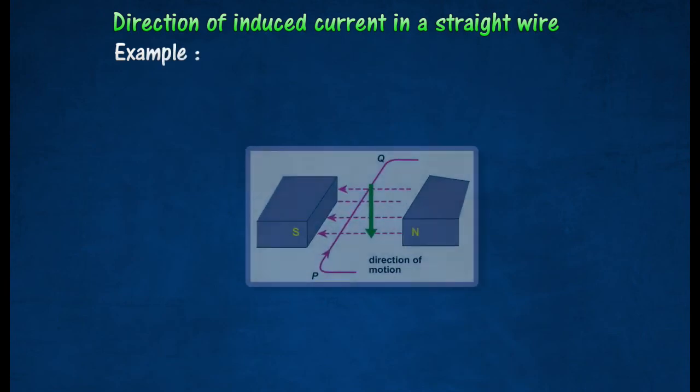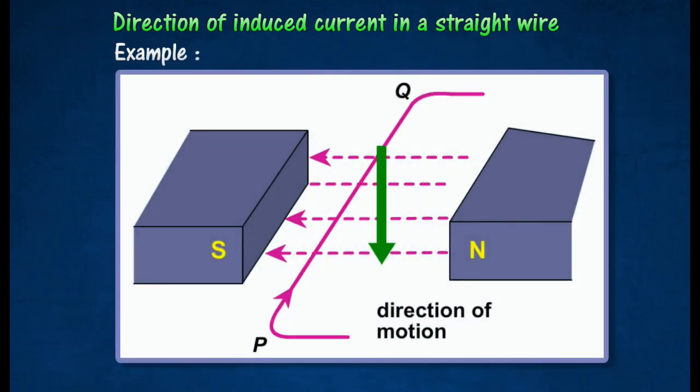A wire PQ is moved vertically downwards in a magnetic field. Applying Fleming's right-hand rule, the induced current will flow from P to Q.